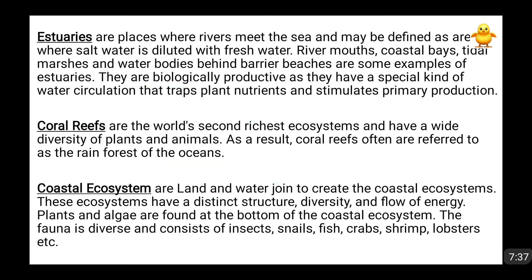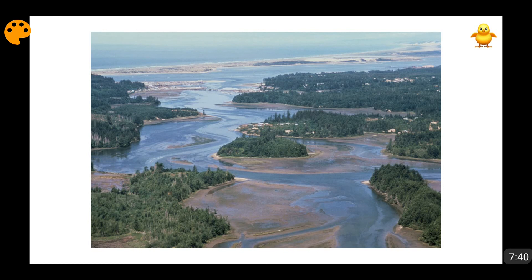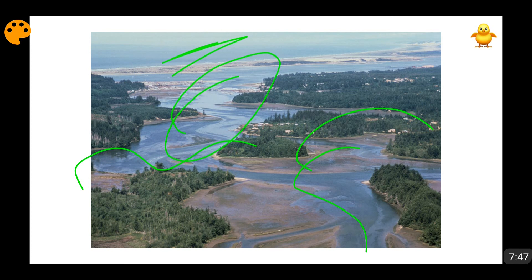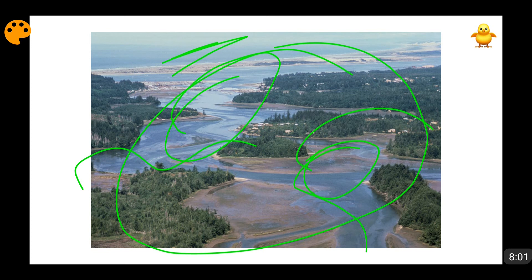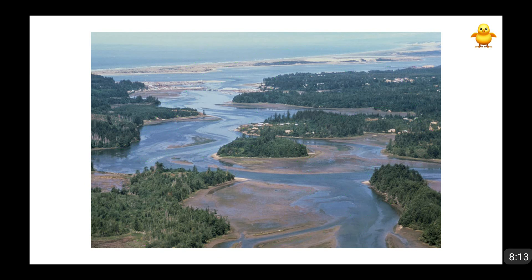Here you can see a figure of an estuary, where rivers from many angles join the ocean. This water is a mix of saltwater and freshwater, making it saline. This whole region is an estuary where a huge species diversity is found and biological productivity is very high. Many mangroves are also found in nearby areas because mangroves also thrive where saltwater and freshwater meet.